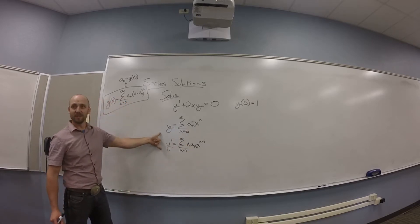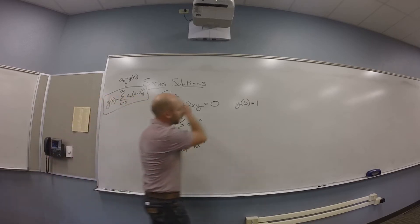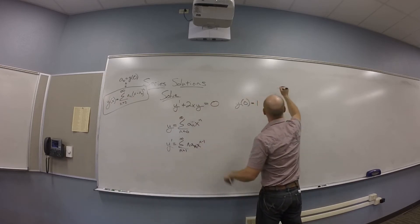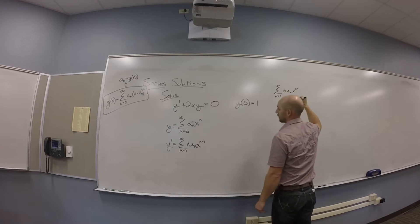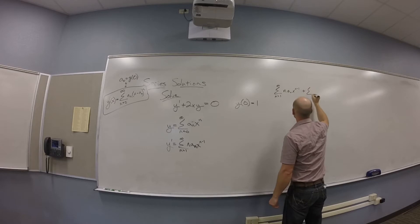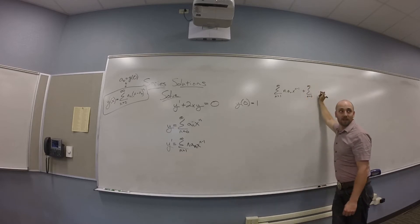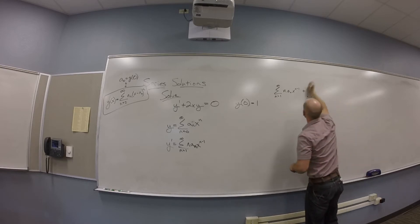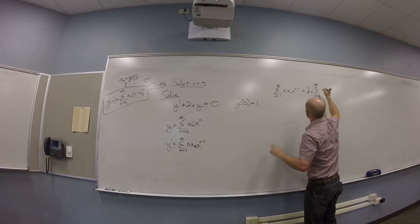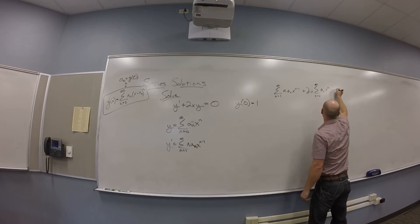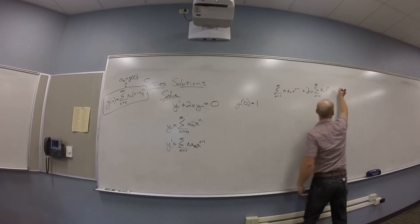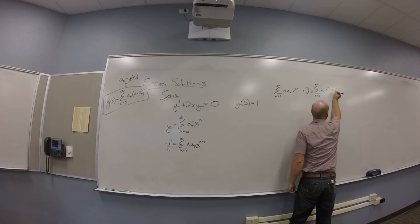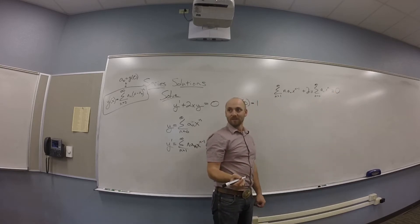So take these two guys and shove them in there. You take those, you shove them in here, you get that you have the sum from N is 1 to infinity of N A_N X to the N minus 1 plus the sum from N is 0 to infinity. So plus 2X the sum from N is 0 to infinity of A_N X to the N. That just becomes 2A_N sum times X to the N plus 1. So this should be equal to 0. And should really be identically 0, because I want this to be true for all the X's.